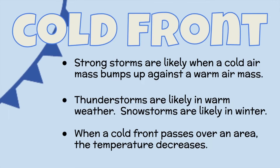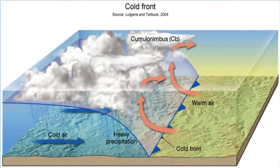Now let's look specifically at a cold front. Strong storms are likely when a cold air mass bumps up against a warm air mass. Thunderstorms are likely in warm weather and snowstorms are likely in winter. When a cold front passes over an area, the temperature decreases — it drops. This is what a cold front looks like when it is next to warm air. We see heavy precipitation and cold air.